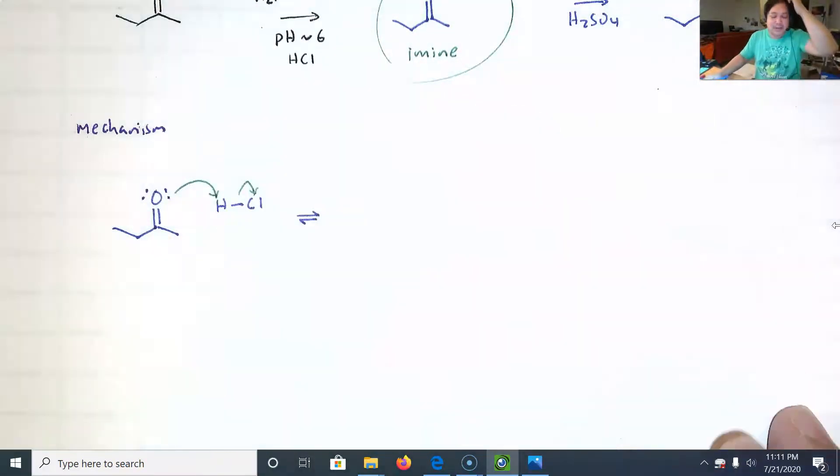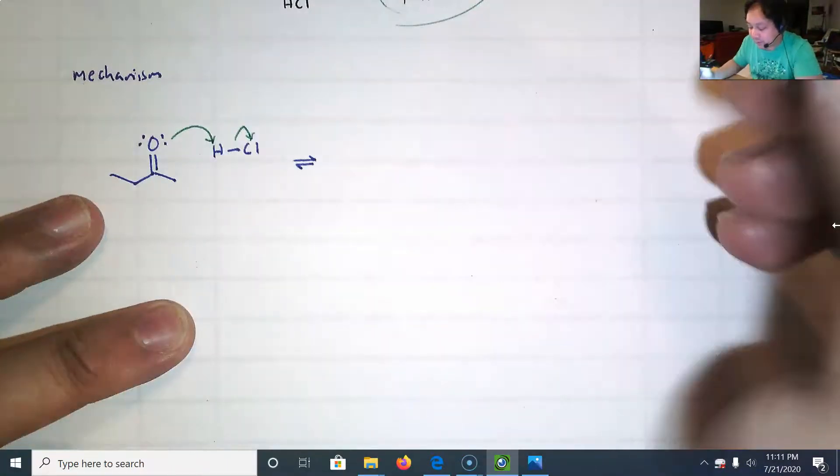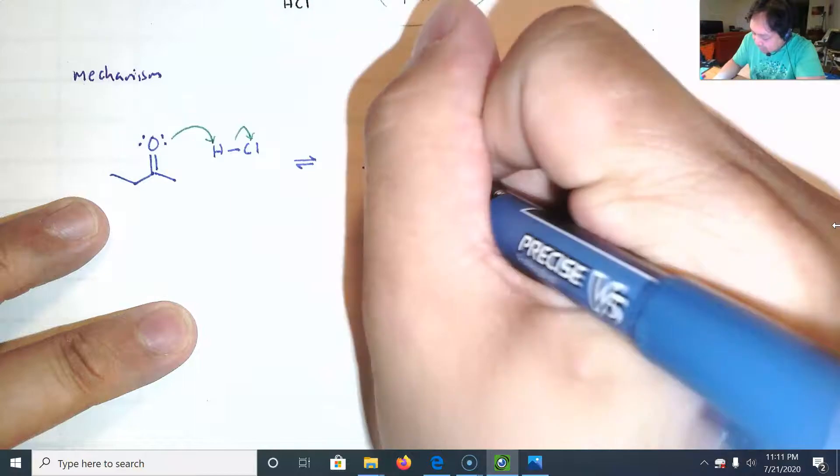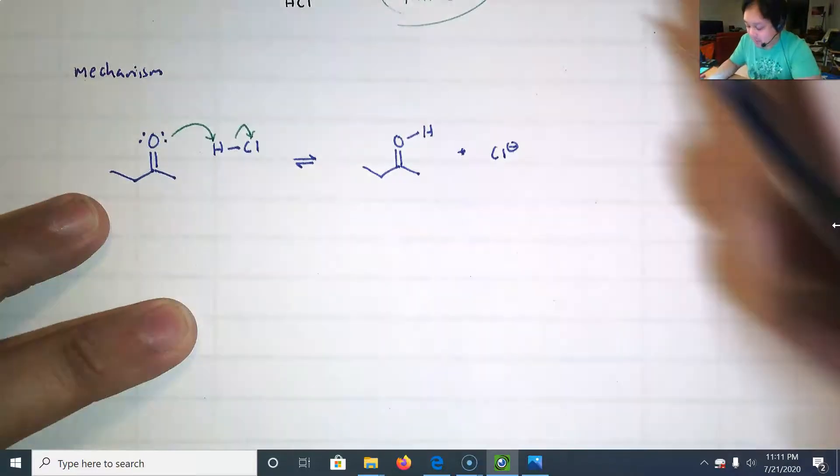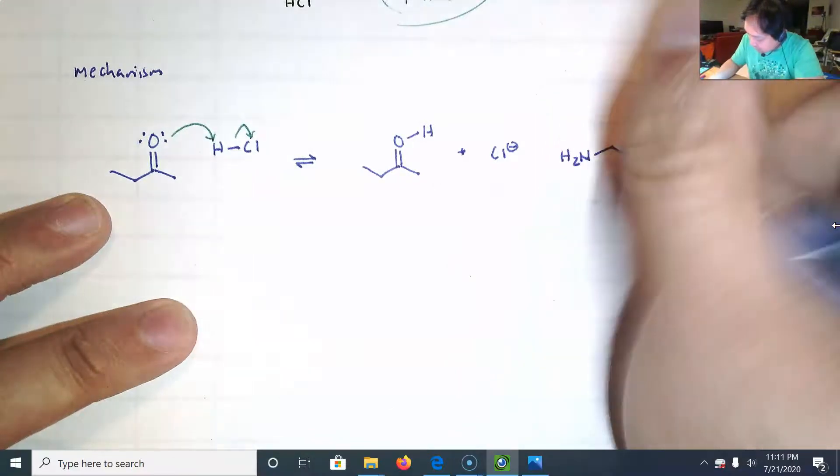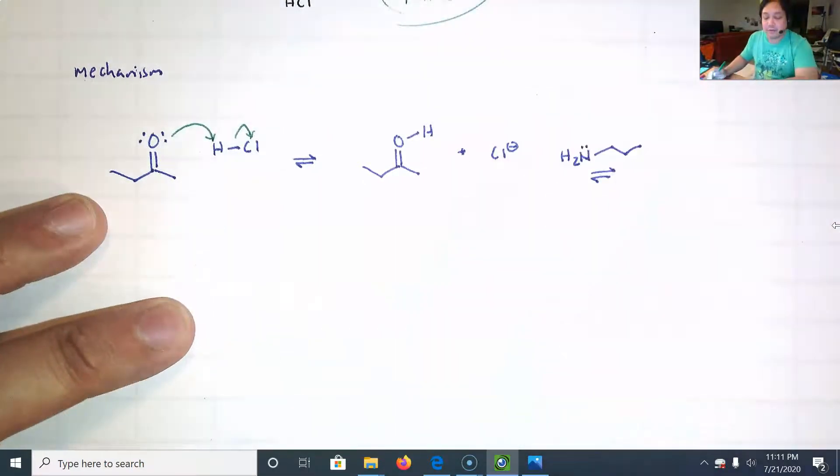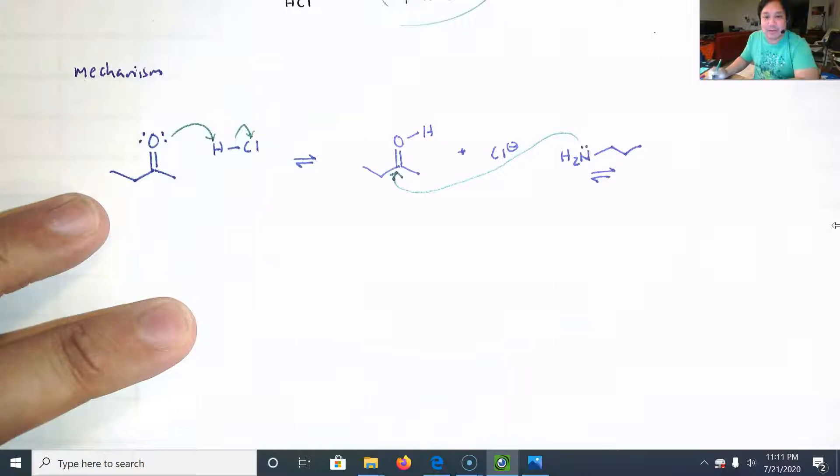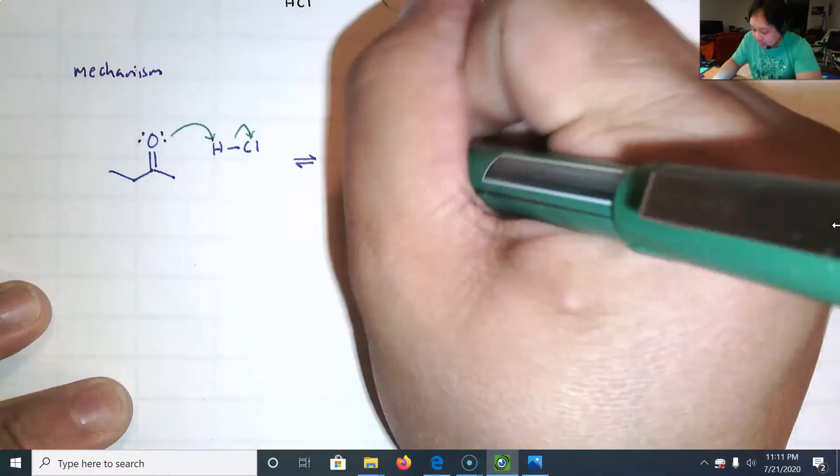A lot of times when I draw a mechanism, I don't use reversible arrows, but I think I'm going to use reversible arrows in this case because imine formation is reversible for sure. We have this protonated carbonyl group plus the Cl-. And now we're ready for the amine to attack. The amine, you've got to use your lone pair. Don't forget to draw that. And it's going to come in and hit that carbon. I forgot that plus charge.